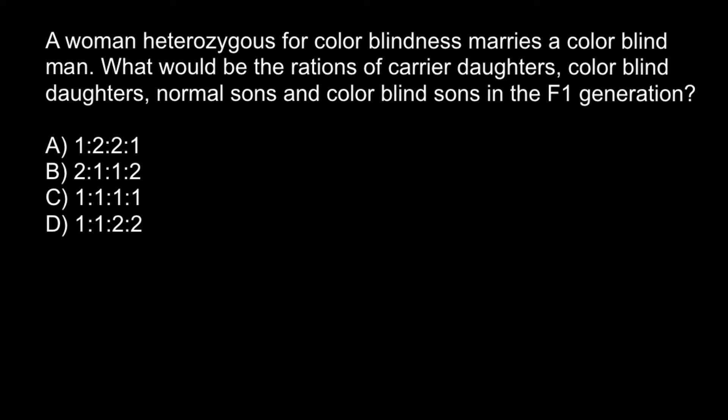Colorblindness is an X-chromosome linked recessive genetic disorder. So the genotype of the female is XX — two X chromosomes — and the genotype of the male is XY. Inheritance of recessive genetic disorders on the X chromosome has its own peculiarities because not all sexes would be affected equally, especially if it is a recessive genetic disorder.